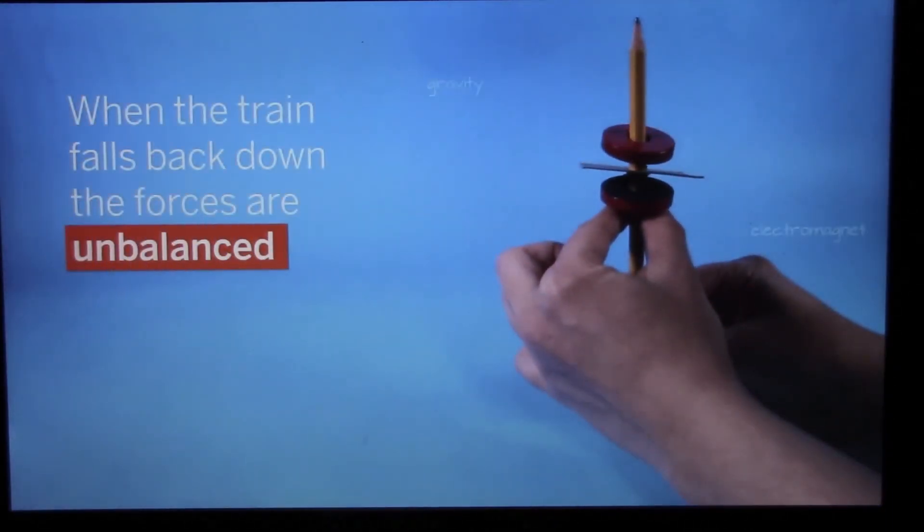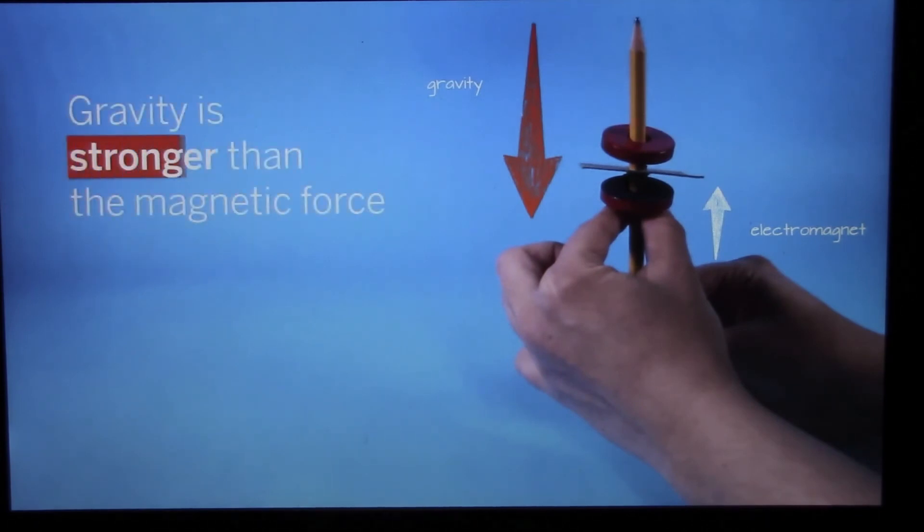When the train falls back down, the forces are unbalanced again. Gravity is stronger than the magnetic force.